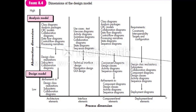The abstraction dimension is divided into two types of models, represented from high to low. The entire diagram is divided into two parts: the higher part represents the analysis model, and the lower part represents the design model. These process and abstraction dimensions together provide the total design model.